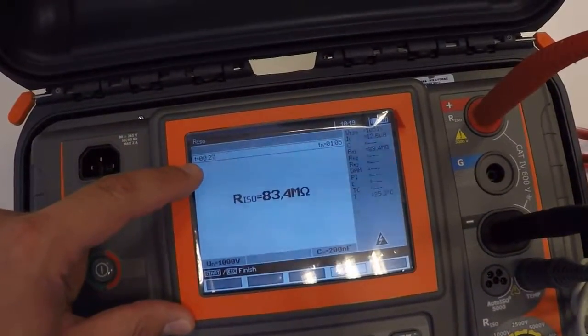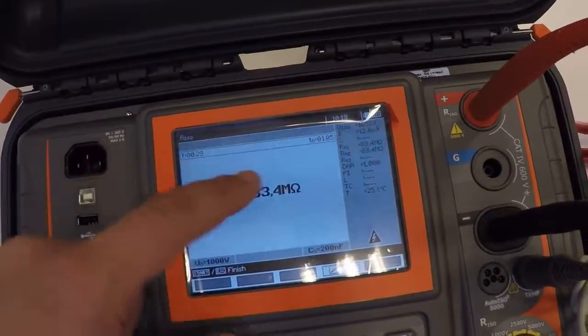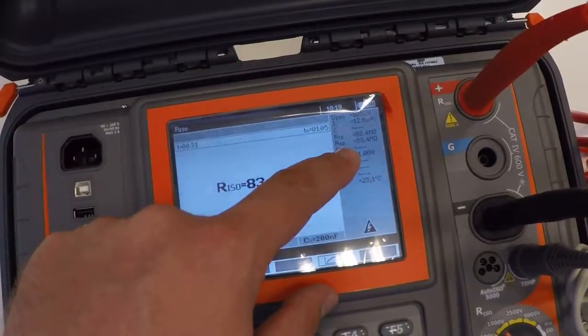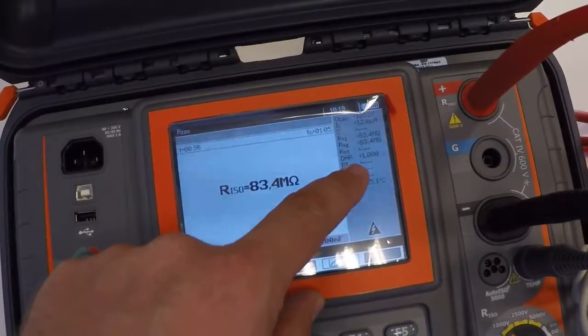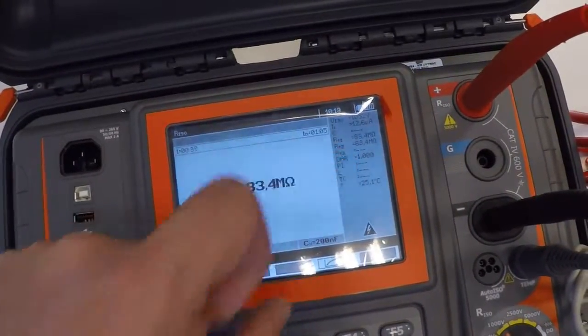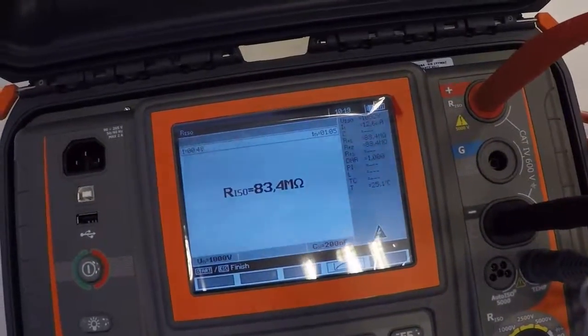After 30 seconds, you will see the resistance after T2, and DAR is the ratio between these two times, two resistances.